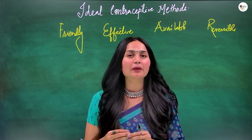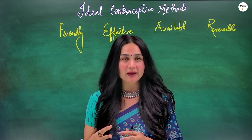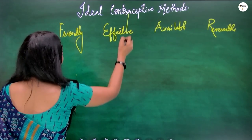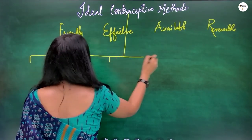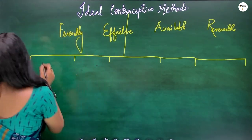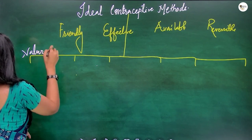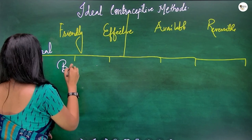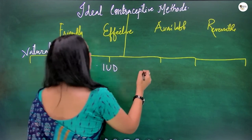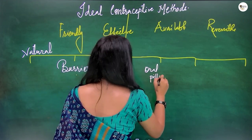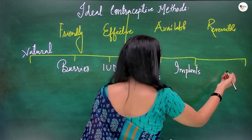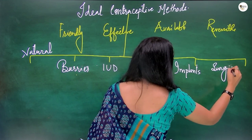Ideal contraceptives are of many types. NCERT has given ideal contraceptives in three main categories. We have varieties of contraceptive methods: first is the natural method, then we have the barrier method, then intrauterine devices, then oral pills or oral contraceptives, then implants, and finally the surgical method.